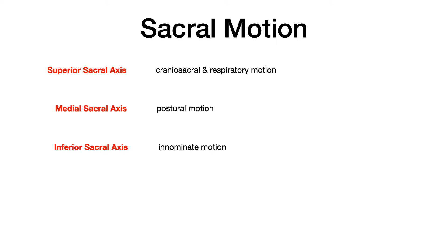Now let's touch on sacral motion. There are technically three different axes in the sacrum, each responsible for a different type of motion. The first is the superior sacral axis, where you get craniosacral and respiratory motion. The second is the medial sacral axis, where you get postural motion. The third is the inferior sacral axis, where you get innominate motion. Because this video is on innominate somatic dysfunction, any abnormality in motion will be at the inferior sacral axis.